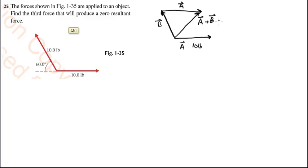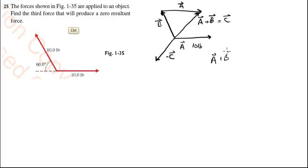If I call that vector C, then the vector that I want is minus C, which is the vector anti-parallel to C. So the solution is A plus B plus (minus C) equals zero.